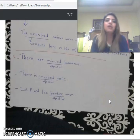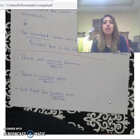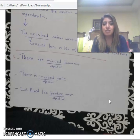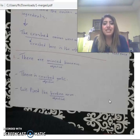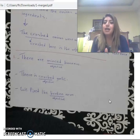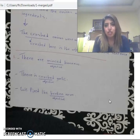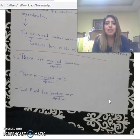More examples: 'There are minced bananas' — 'minced' is the adjective as a past participle. 'There is crushed garlic' — 'crushed' is the adjective as a past participle. 'We fix the broken arm' — 'broken' is a past participle form used as an adjective in position.